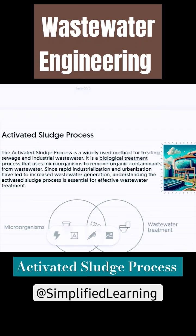Welcome to Simplified Learning. Today we are going to discuss a topic from wastewater engineering: the Activated Sludge Process. What exactly is the Activated Sludge Process, or ASP? It is a method of treating wastewater in which biological treatment is involved, meaning it is a secondary treatment process.